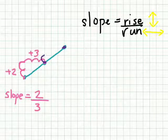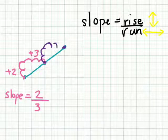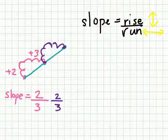So let's count. We're going up two again, and one, two, three. Still two over three. Any single segment on the line will have the same slope.